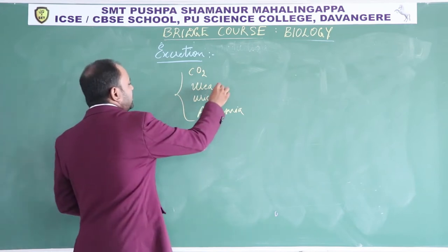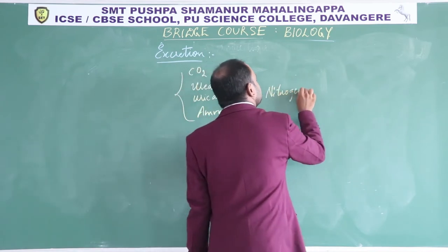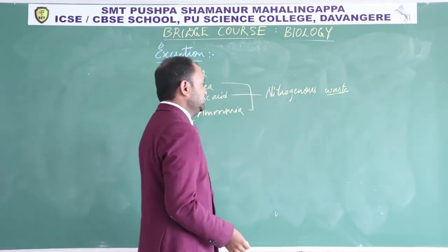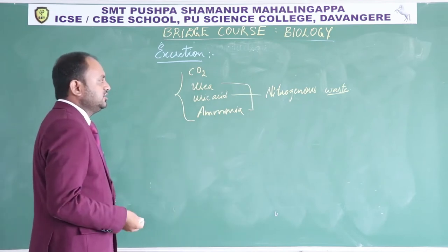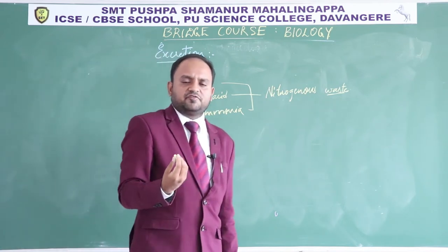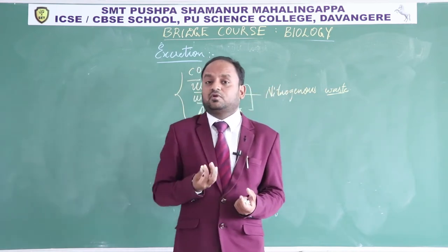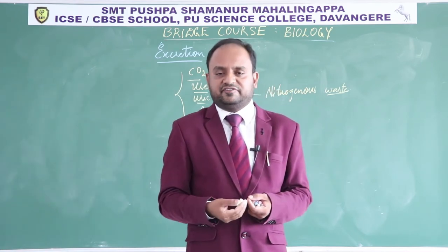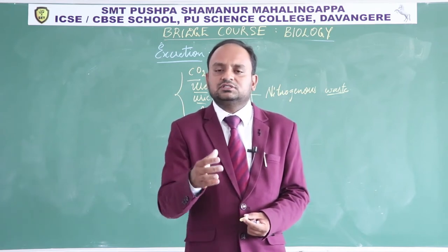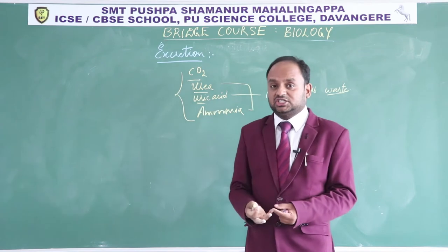Urea, uric acid, and ammonia together are called nitrogenous waste because they contain nitrogen. If these compounds start accumulating in the body — if the concentration of urea, uric acid, ammonia, and carbon dioxide increases — it will lead to a toxic effect, altering the physiological functions of the body, and the organism will die. So excretion is important and essential for the existence of life.